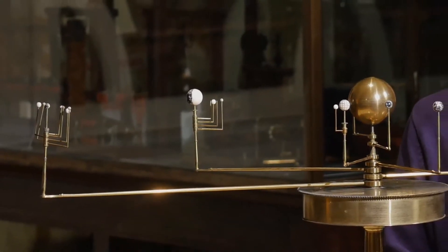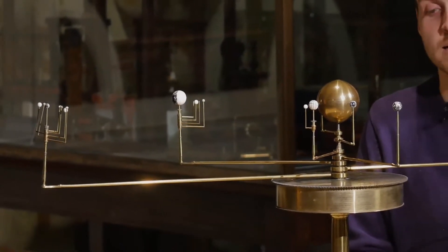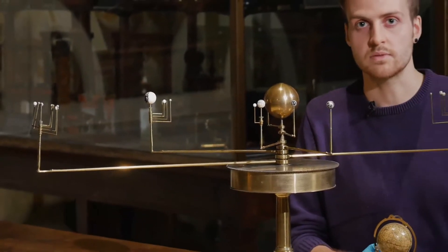This is an early form of planetarium known as an orrery. It gets its name from the Earl of Orrery, who owned one of the earliest examples of these machines.